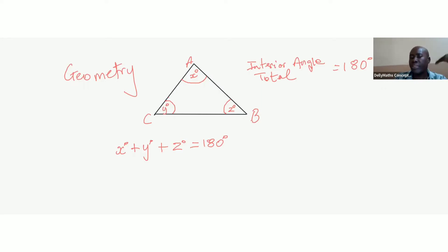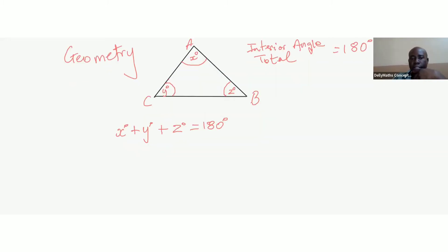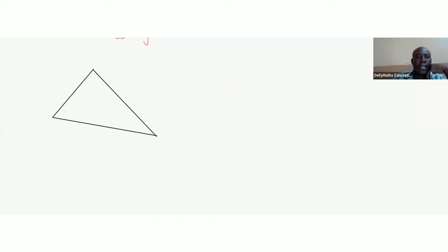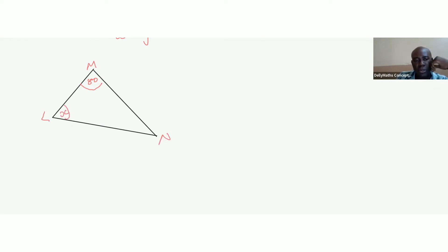With this fact we can solve problems involving triangles with missing angles. For example, let's say we have another triangle with vertices L, M, and N. We have 80 degrees at M, x degrees at L — which we don't know — and 30 degrees at N.